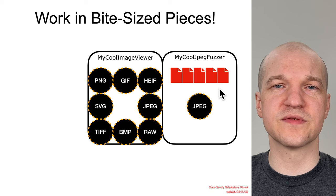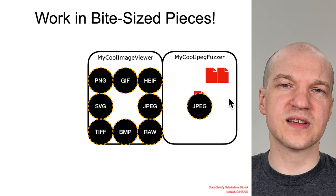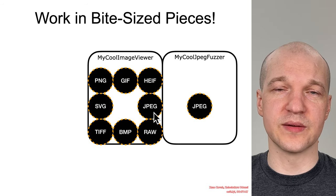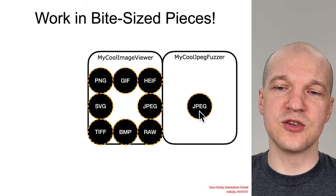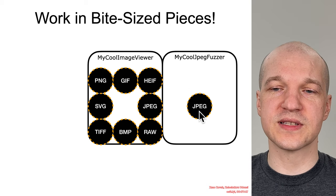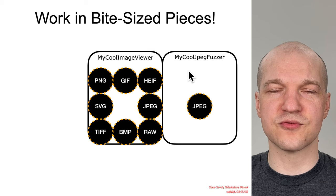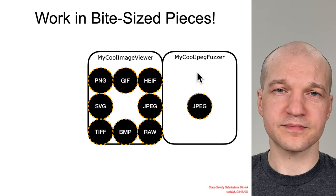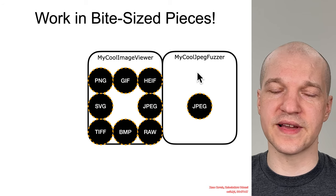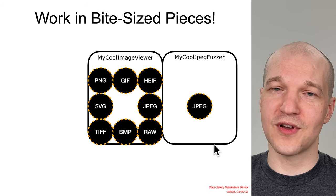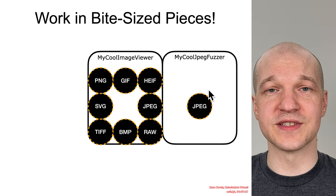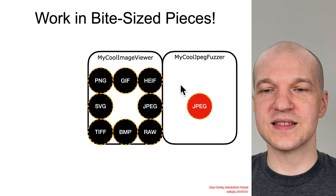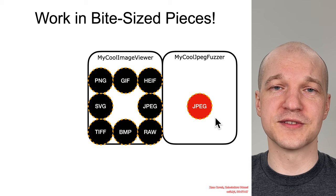For an attacker that means creating a bunch of JPEGs and feeding them into the program. For a defender managing the code, you can take the JPEG parsing code within your codebase — maybe it's a library, maybe it's not — and pull it out into a separate project, wrapping a harness around it that creates the randomized input and feeds it into the JPEG parser. You can start with or without a template, as simple and dumb as you want, and if you haven't been programming paranoid, even a dumb fuzzer will almost certainly find crashes.